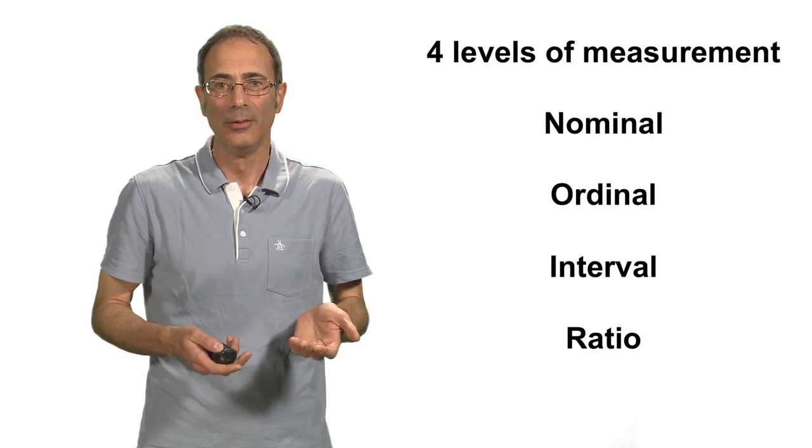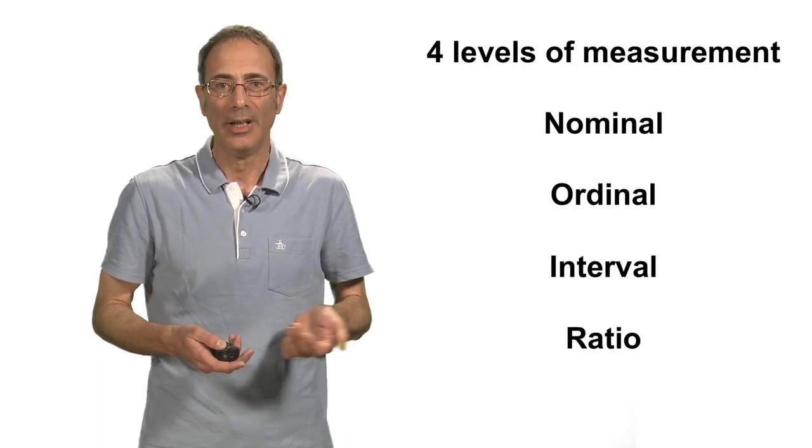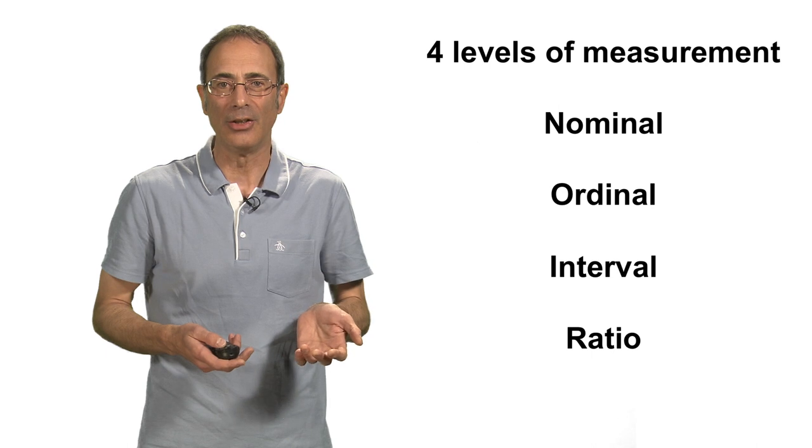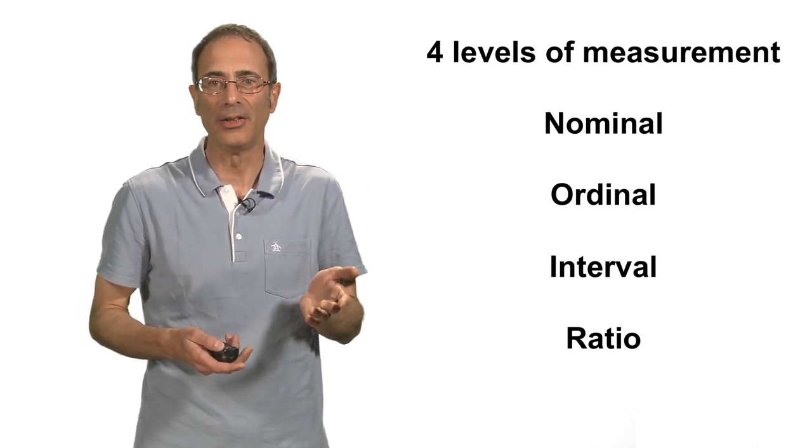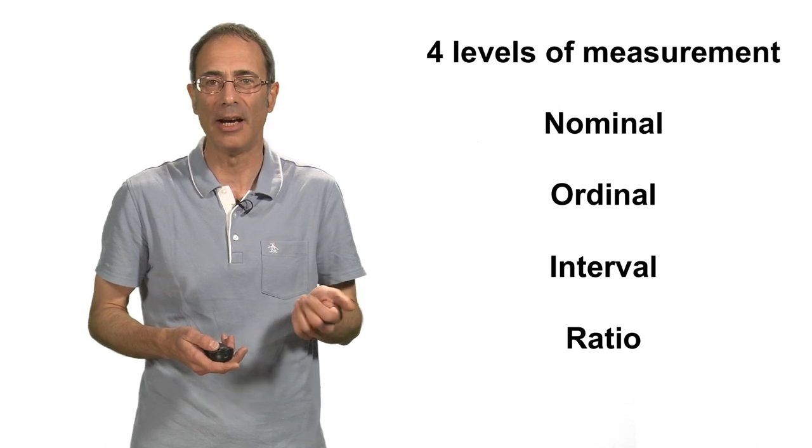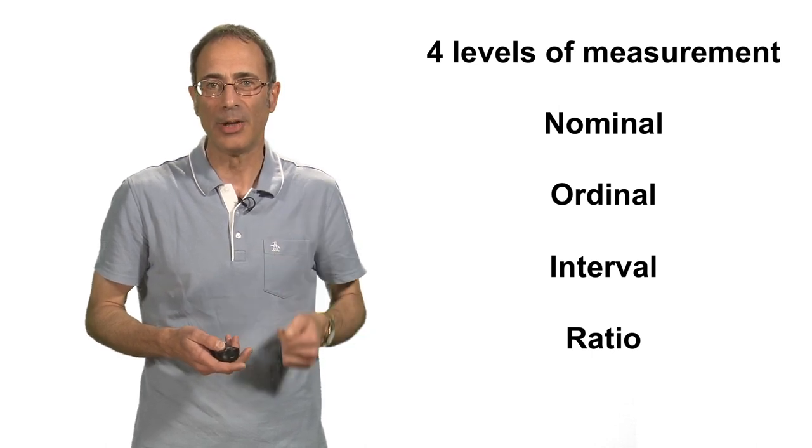So what are they? Well, the four most widely known levels of measurement were outlined by psychologist Stanley Smith in 1946, and they are nominal, ordinal, interval, and ratio. And they refer to the nature of the information that different kinds of numbers carry. So I'll describe them to you.